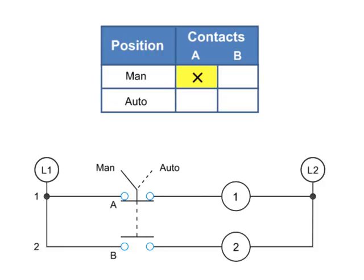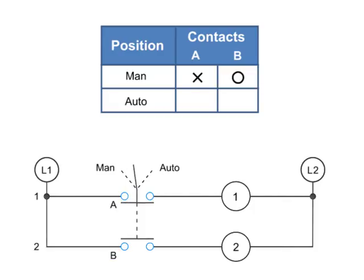An X is placed in the table if a contact is closed in any position. An O is used to depict that a contact is open. Thus, if the selector switch is in the MAN position, A is X or closed and B is O or open. When the switch position is set to AUTO, A is O or open and B is X or closed.